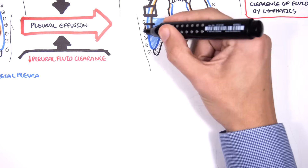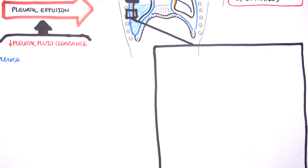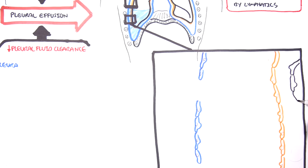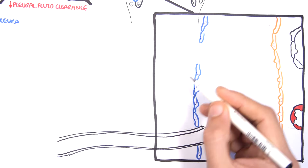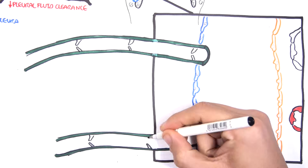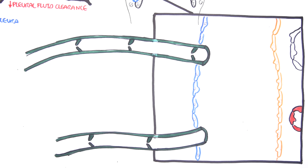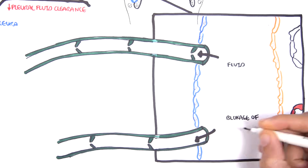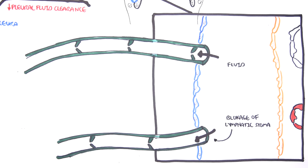The second mechanism of developing pleural effusion is when there is a decrease in pleural fluid clearance, which involves the lymphatics. Fluid is cleared from the pleural space by the lymphatic system. If you have a blockage of the lymphatic stoma, this means less fluid drains, leading to pleural effusion.